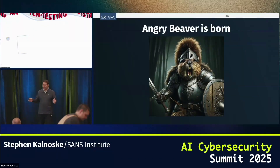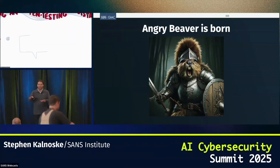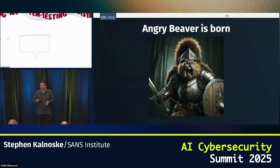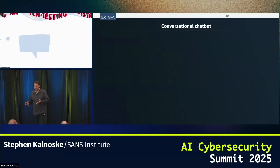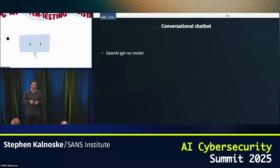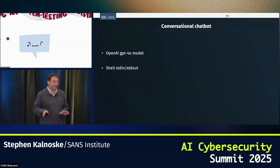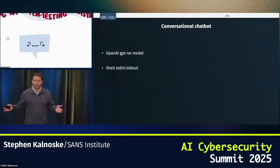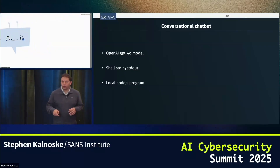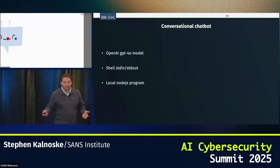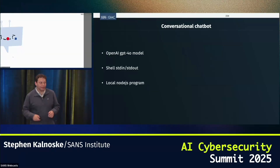From all that, we got what we call Angry Beaver. If you see Foster — he's teaching a session tomorrow morning — ask him to tell you the story of how it got that name. For the conversational chatbot, we're using the OpenAI GPT-4o model, which was the latest and greatest at the time and still is for the price, unless you want to go full o1 Pro and spend $600 per token. We decided to make this a command line driven application since all these tools like Metasploit and nmap are in the command line anyway. It is a local Node.js program — because I am Python's biggest hater — and that came back to bite us a little bit.